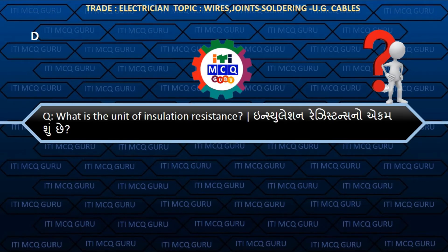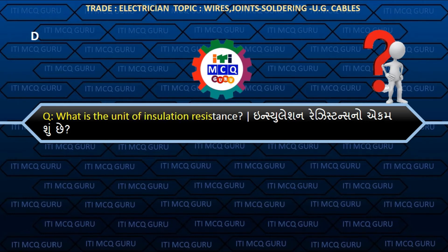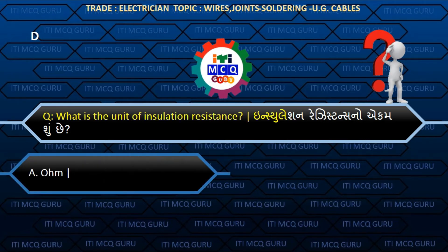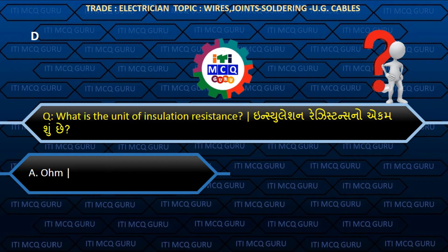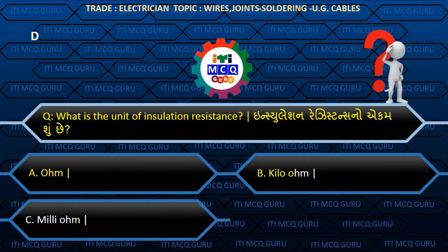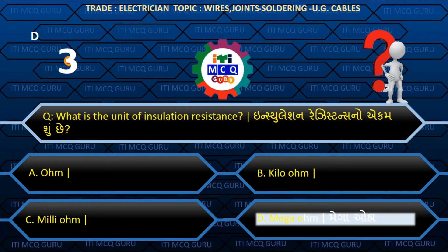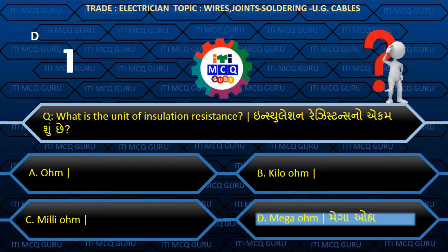What is the unit of insulation resistance? (Insulation resistance noo ekam shun chhe?) Answer D: Megaohm.